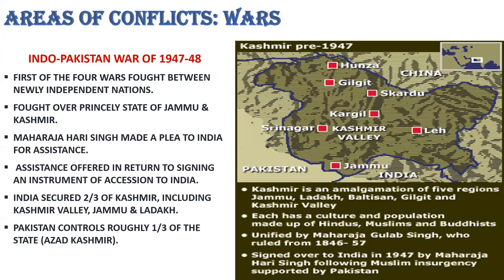India referred the dispute to the United Nations Security Council on January 1, 1948. The United Nations resolution, though not binding on India and Pakistan, clearly said that Pakistan is the aggressor and has to vacate all occupied territory and hand it over to India. India has to remove all its forces, leaving aside enough to maintain law and order, and conduct a plebiscite in the state. Plebiscite means direct vote of the people expressing their will. So far, India has not conducted a plebiscite, as nearly one-third of the state of Jammu and Kashmir is still under Pakistan.